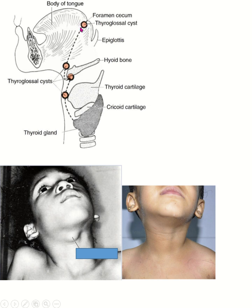This is the normal pathway through which the thyroid gland leaves its original location where it developed and reaches its final destination. Normally, the connection between the final destination and the origin is lost. However, in ectopic locations, the thyroid gland may remain anywhere along this pathway.